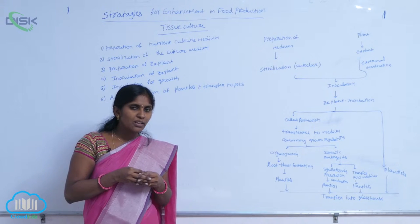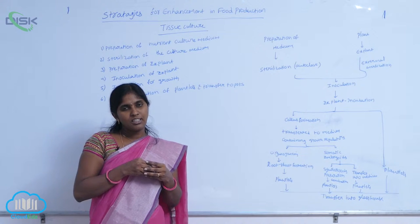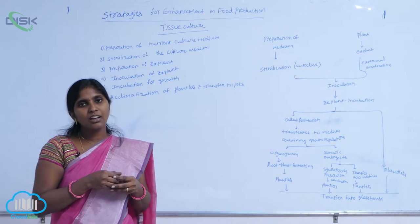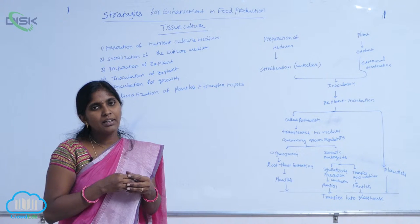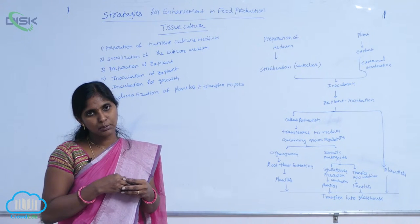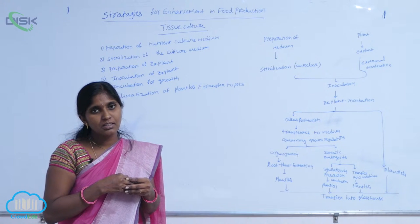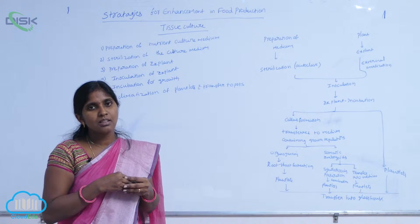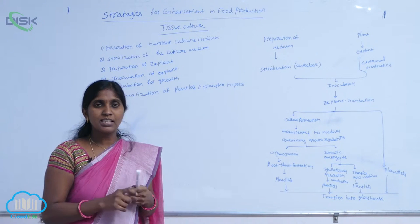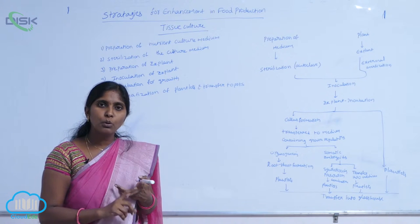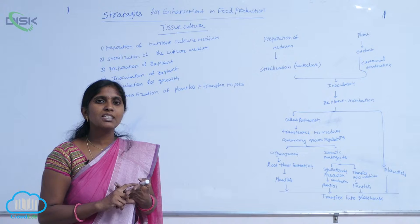What are the parts selected as explant? Generally, viral-free or disease-free parts of the plant are used as explant. The parts used include axial buds, terminal buds, seeds, and pollen grains — all of these are used as explant.